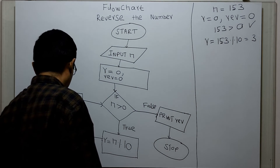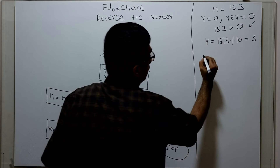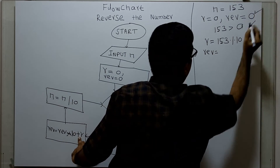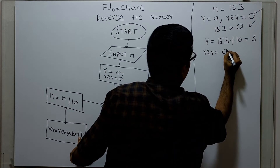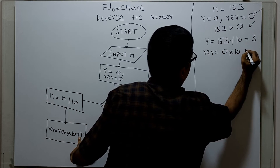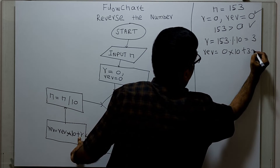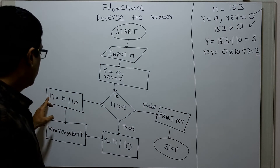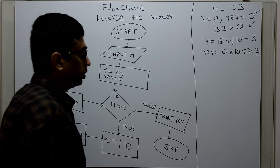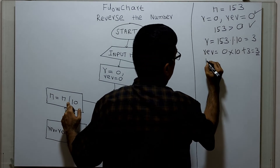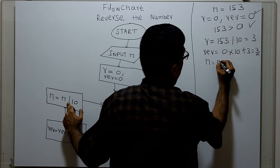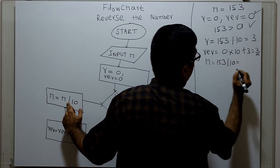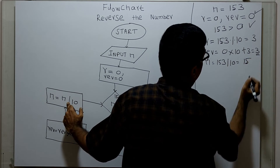Next, REV equal to REV multiplied by 10 plus R. The existing value of REV is 0, so 0 into 10 plus 3 equals 3. REV is now equal to 3. N equal to n divided by 10 — integer division. N equal to 153 divided by 10 is 15.3, the fractional part is omitted, so N is 15.